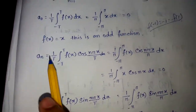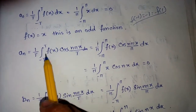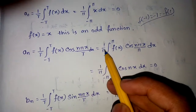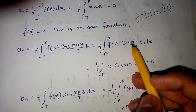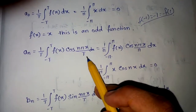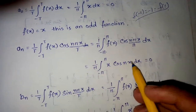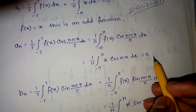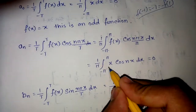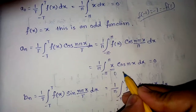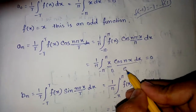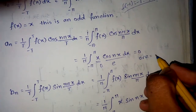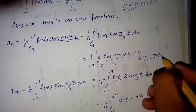For a_n, the formula is 1/t times the integral from minus t to t of f(x) cos(n pi x / t) dx. Replacing t with pi, this becomes 1/pi times the integral from minus pi to pi of x cos(nx) dx. This also equals zero, because x is an odd function and cos(nx) is an even function, and the product of an odd and even function is an odd function.